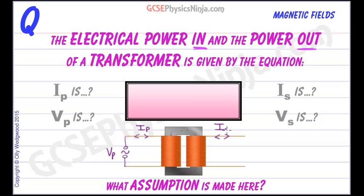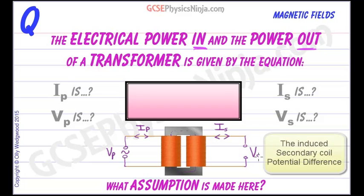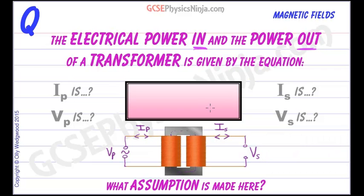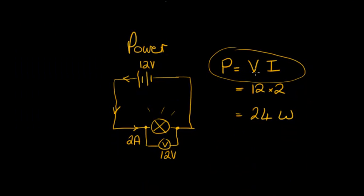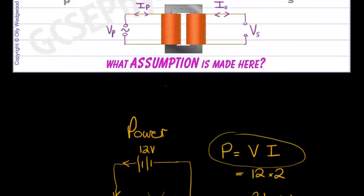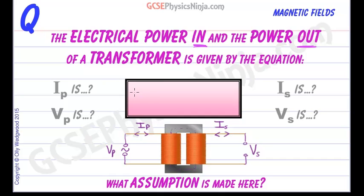So we can call that I subscript S and an associated secondary potential difference which we will call VS or the voltage on the secondary side. So the power in to the input side using the same idea as P equals VI would be VP multiplied by IP. That's the input power. We can say power in, the amount of energy that's been put in to this side every second.